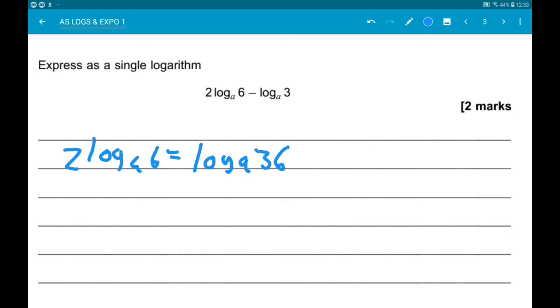So now we have log 36 minus log 3. So that's gonna be log 36 over 3, which is log 12.